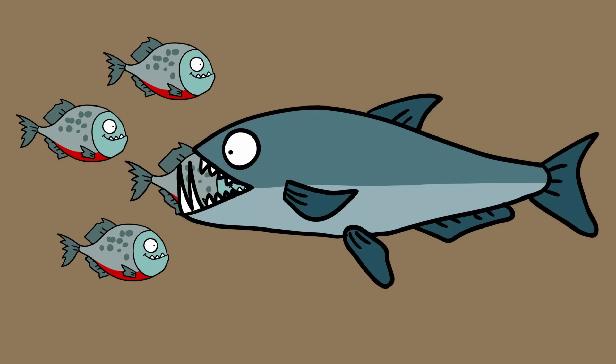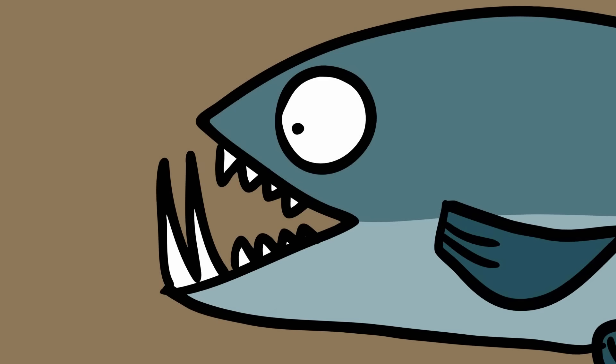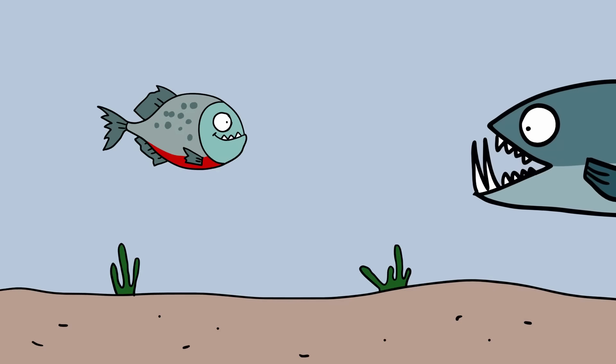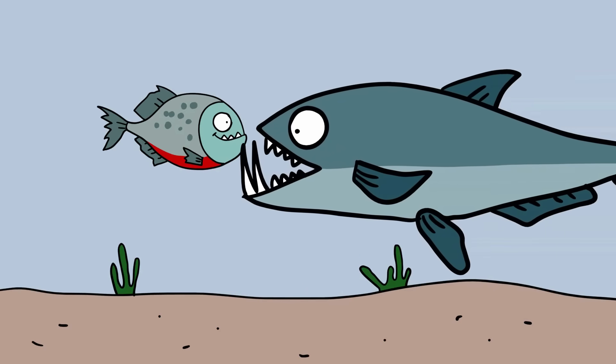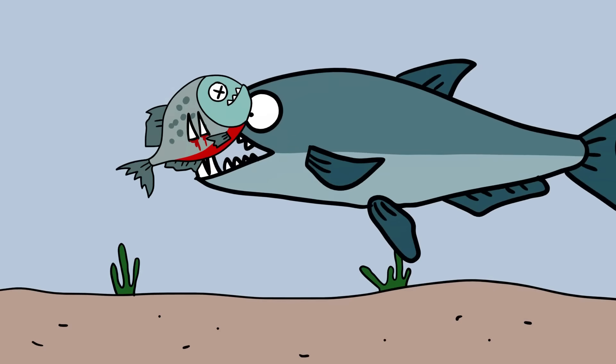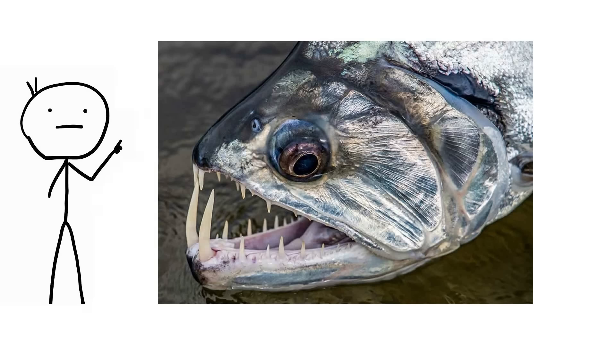They get their name from the two tusks that sprout from their lower jaw, which can grow up to 15 centimeters, in which they use to literally impale their prey after viciously lunging at them. Their fangs are so big, in fact, that they have special holes in their upper jaw to avoid impaling themselves.